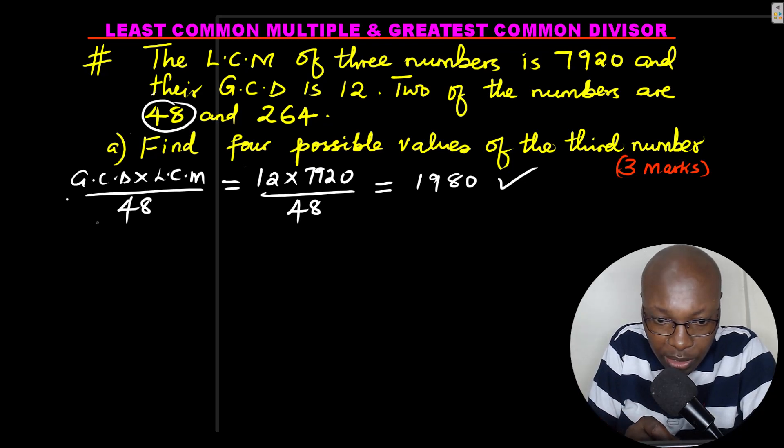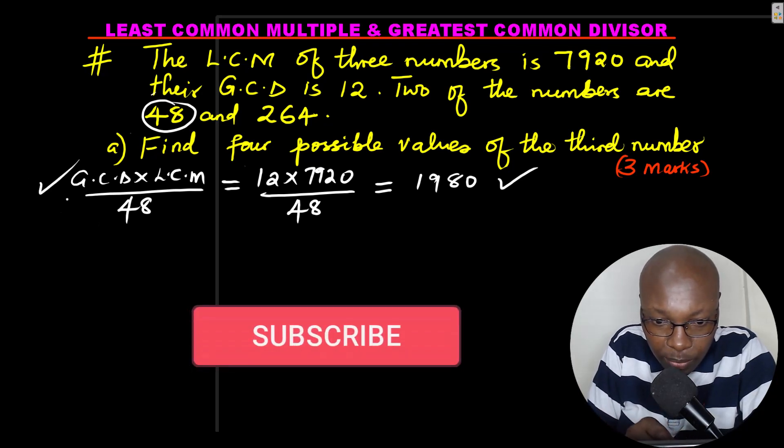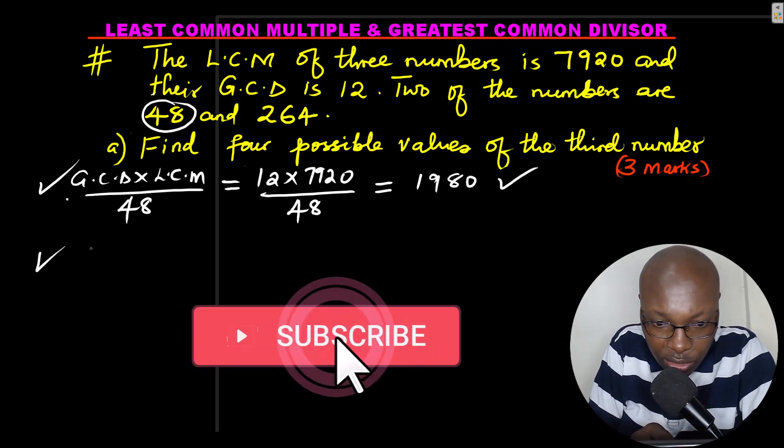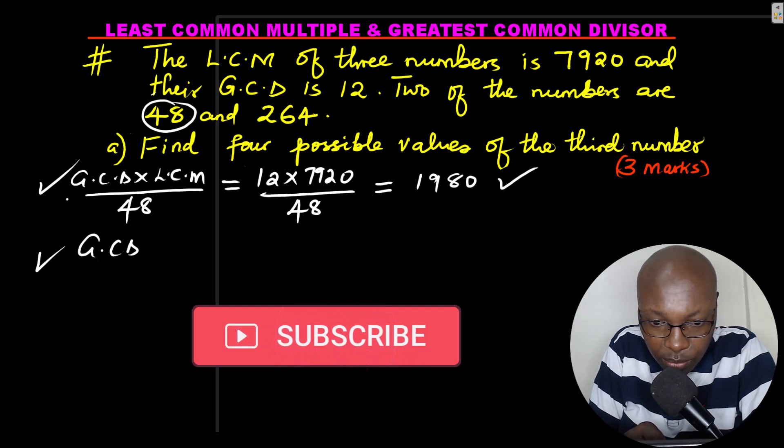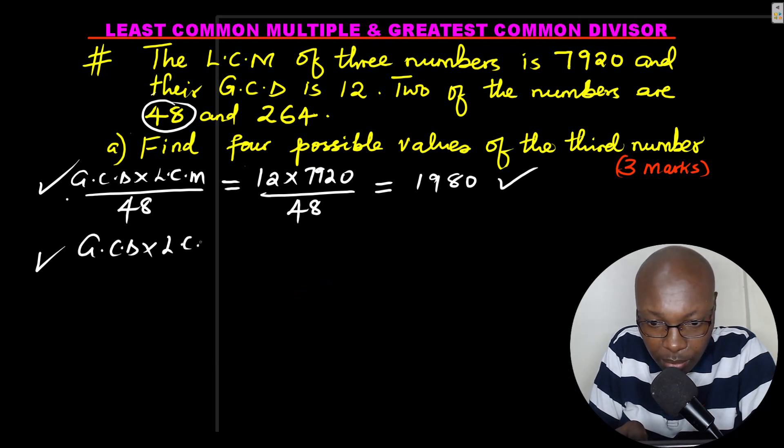The other possible number, this is how you get it. So that is the first way. Now the second way, you just use the same formula, GCD times LCM, divided by the other number, which is 264.